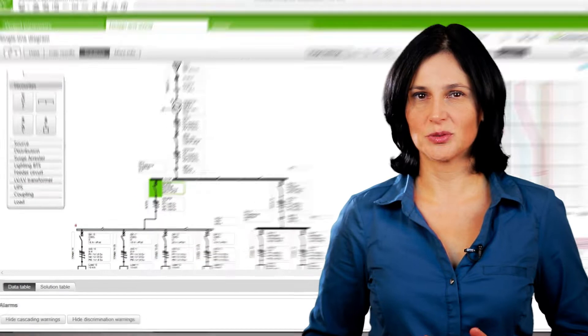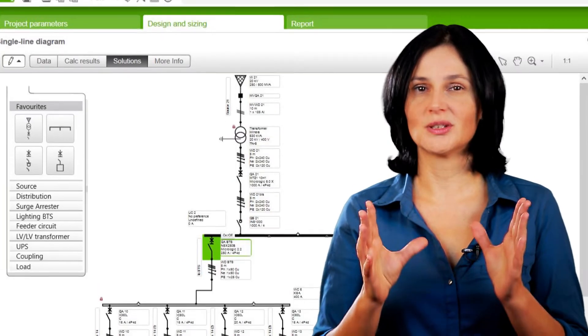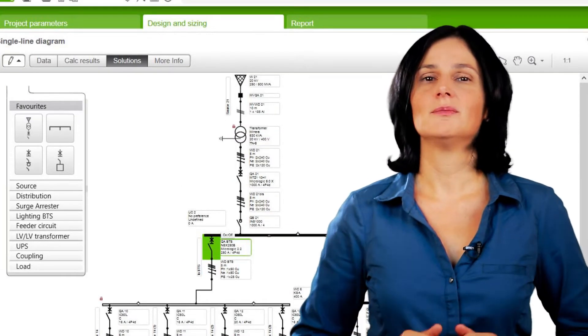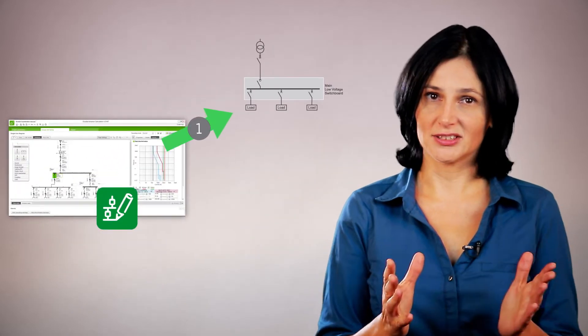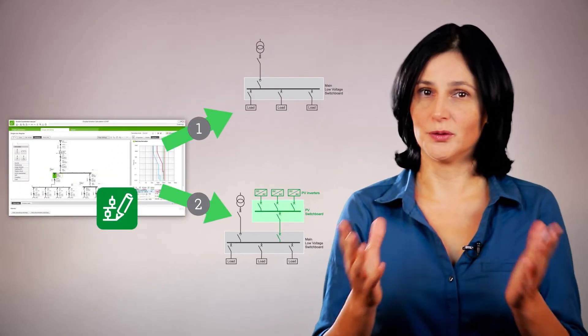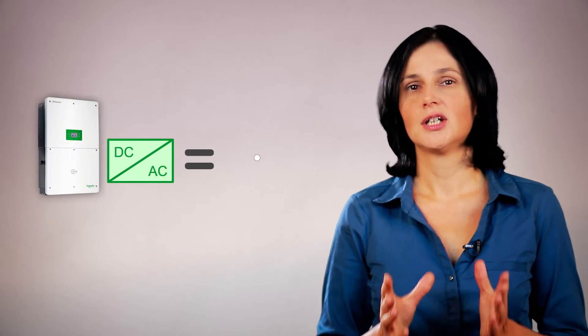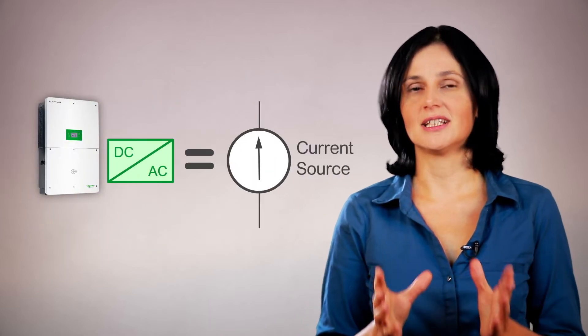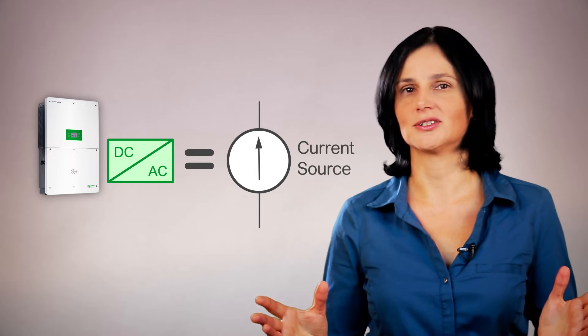With photovoltaic production for self-consumption, there are two specific points to consider when making electrical installation calculations. Calculations should be done for each operating mode, and photovoltaic inverters should be considered as current sources for short-circuit current calculations.